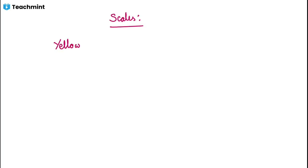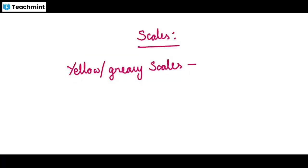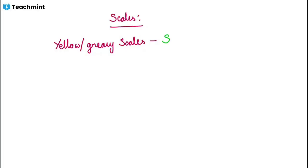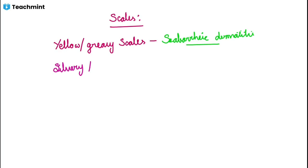Now let's discuss different types of scales and their associated skin conditions. If a condition has yellow or greasy scales — think oily, think of something starting from our scalp — it is associated with seborrheic dermatitis. It is similar to dandruff but slightly different; we will discuss it later. Seborrheic dermatitis has its own predilection sites based on which we can diagnose the condition. Then, silvery or mica-like scales are most frequently seen in psoriasis.